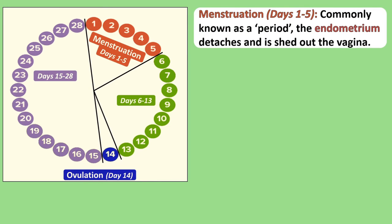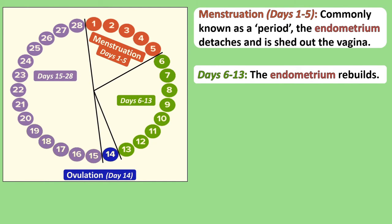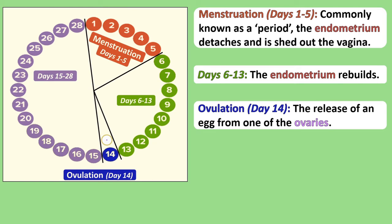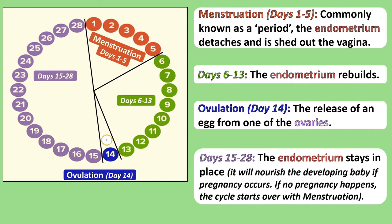There are four stages to the menstrual cycle. The first stage is menstruation, more commonly known as a period. In days 1–5, because no pregnancy has happened, the endometrium detaches from the wall of the uterus and exits the female through the vagina, usually accompanied by blood. Days 6–13: the endometrium begins to build back up in the uterus. On day 14, one ovary releases an egg cell into the fallopian tube — this is called ovulation. For the remaining days 15–28, the endometrium remains in place. If a pregnancy happens, the endometrium will nourish the developing baby. If no pregnancy happens, after day 28 the cycle starts over and another menstruation takes place.